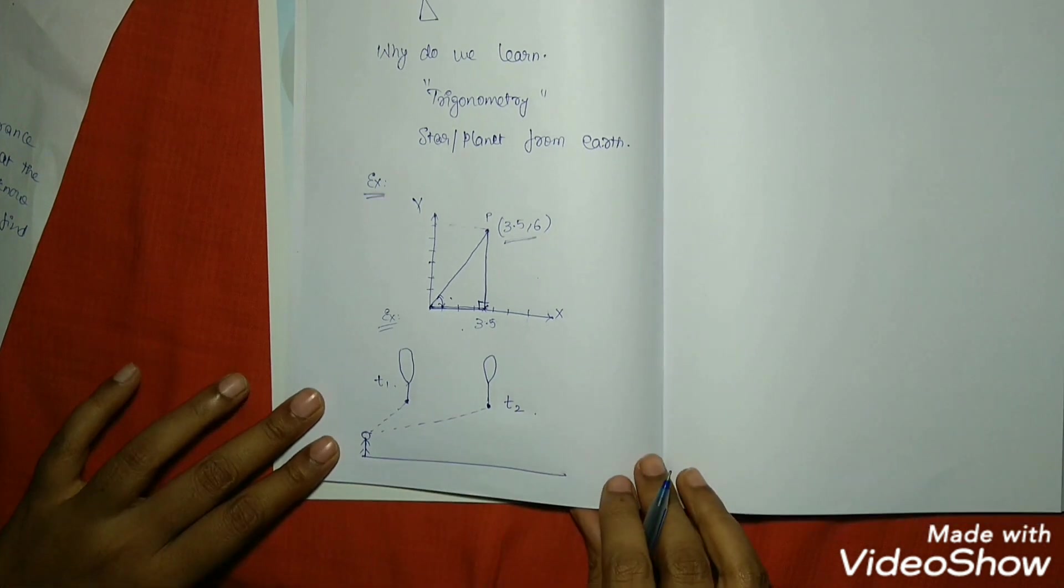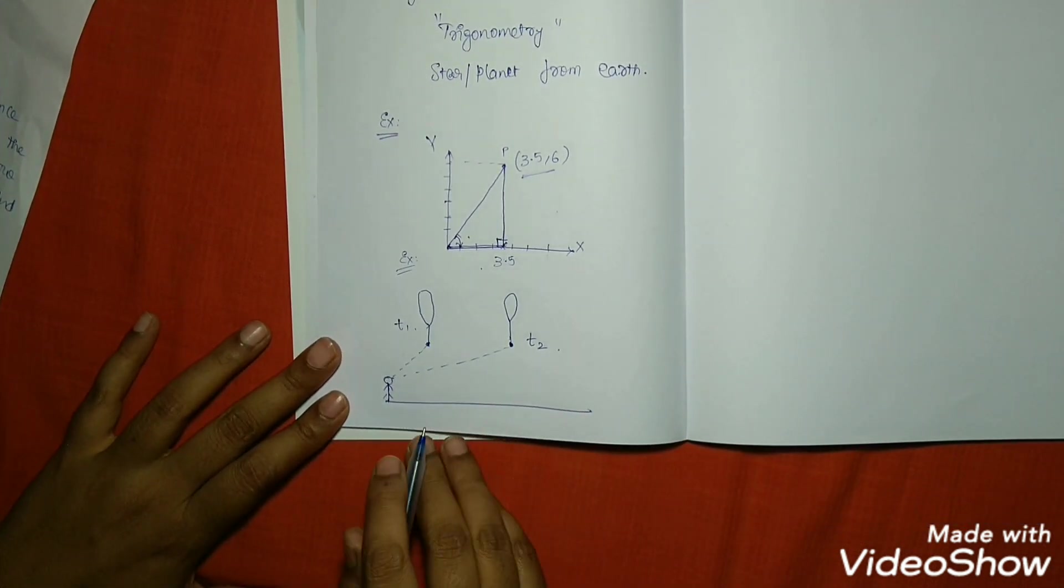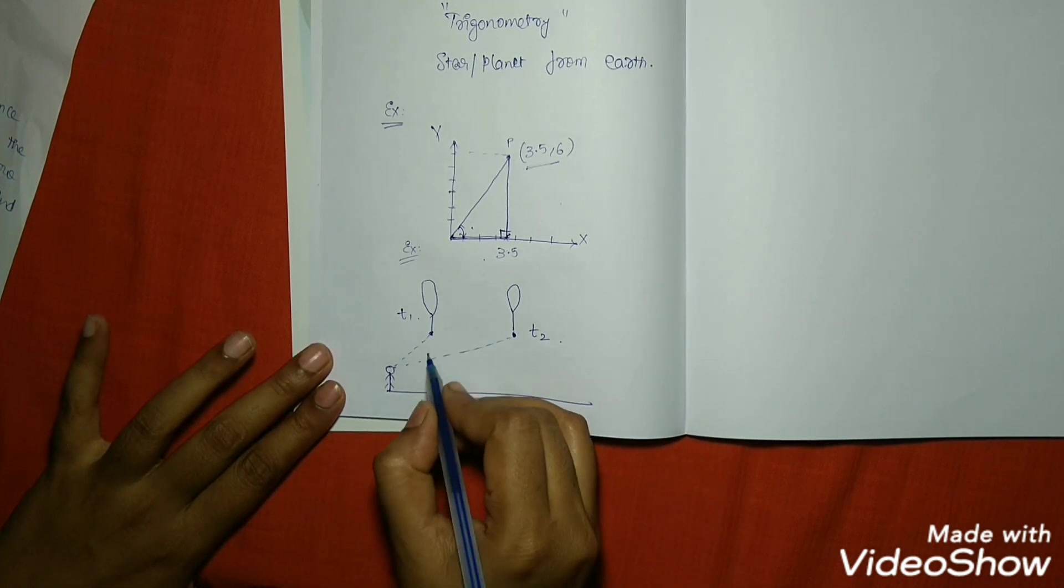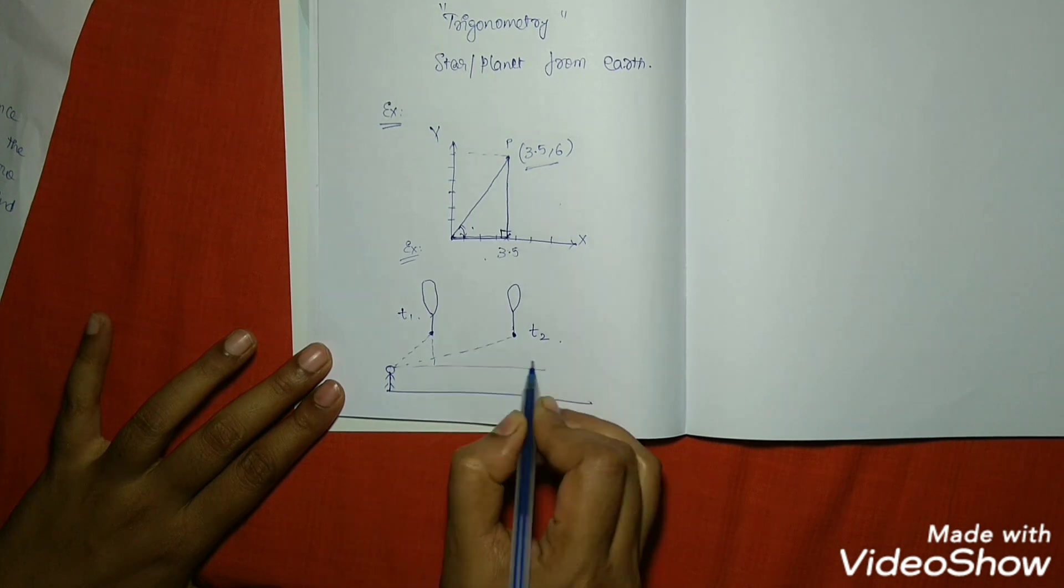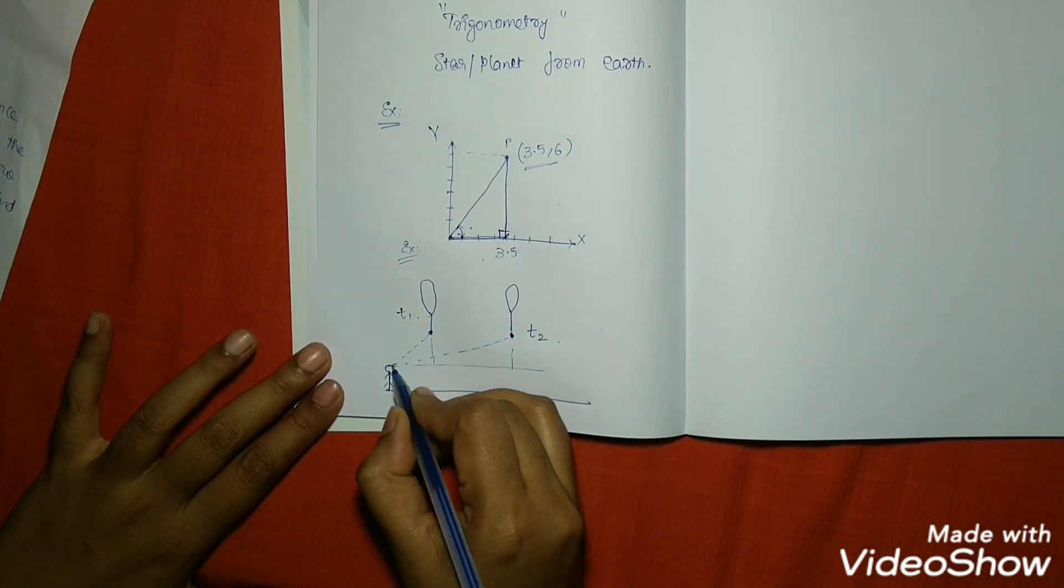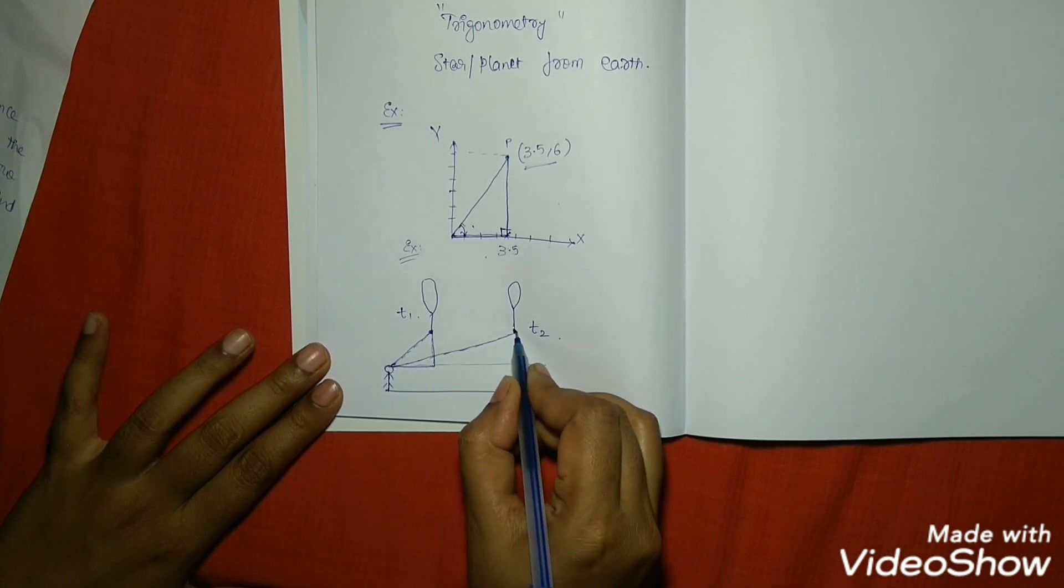Now see, the boy observed two different positions of balloons, standing in the same position in different timings. I can draw two triangles here, two right-angled triangles. One is like this and the other one is like this.